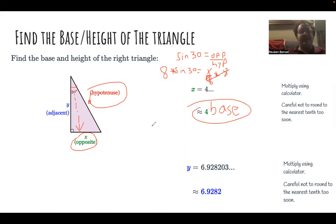Then we want to find the height. So the height, we want to actually shift gears now and use the adjacent over hypotenuse. I'm going to write that cosine of 30 equals adjacent over hypotenuse.